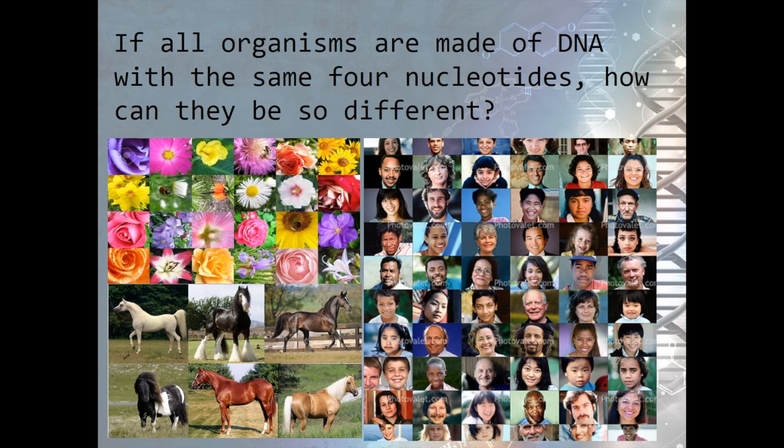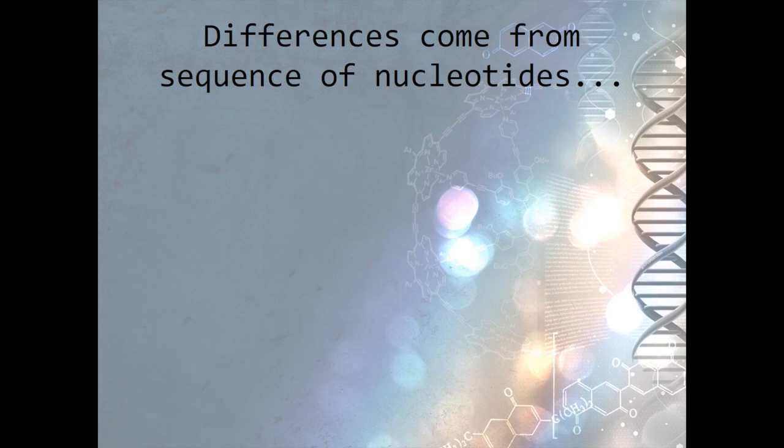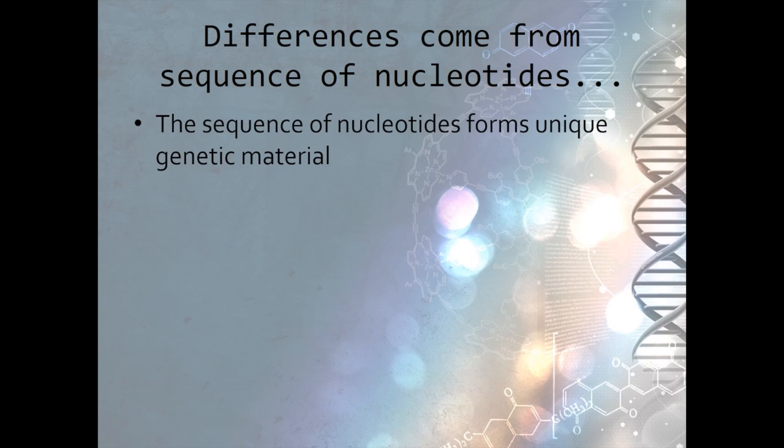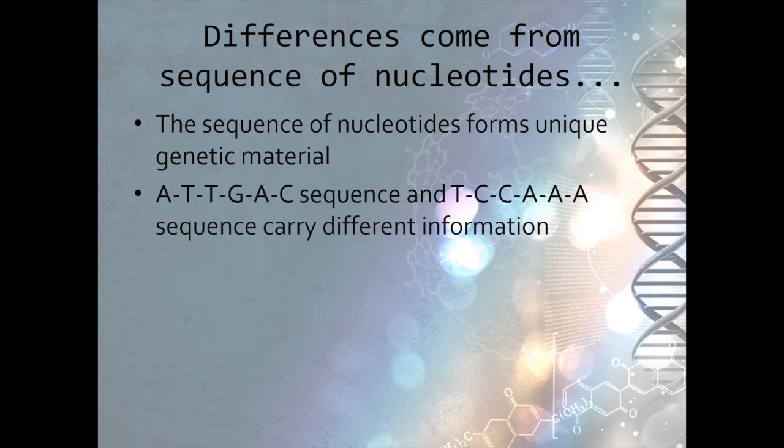With our knowledge of DNA structure, we come across another question. Organisms are all made of DNA that has the same four nucleotides, so how can they be so different? It's true the same four nucleotides are present in all organisms' DNA, but the sequence of nucleotides is not the same. This sequence is the source of unique genetic material. For example, the sequence ATTGAC does not carry the same information as the sequence TCCAAA. These different sequences are responsible for the differences between organisms.